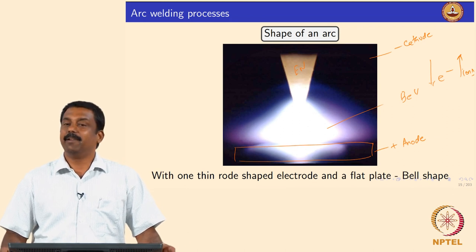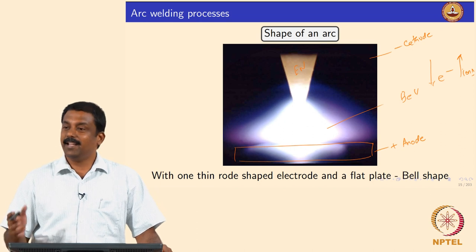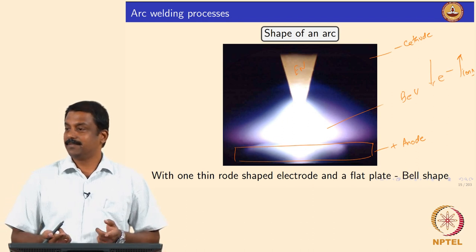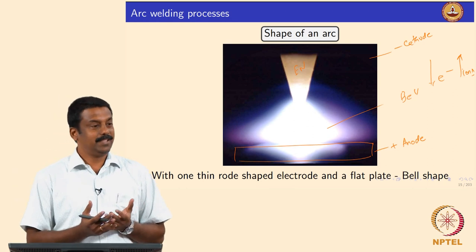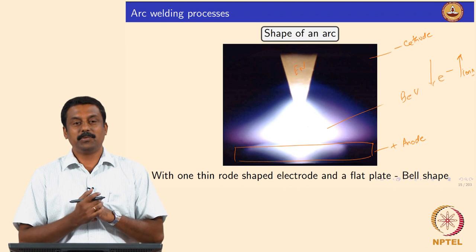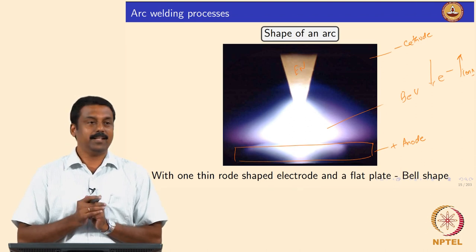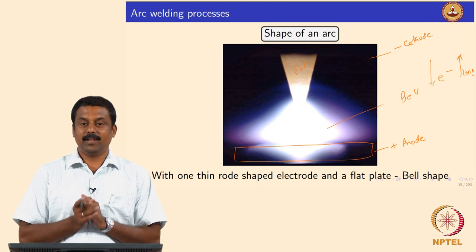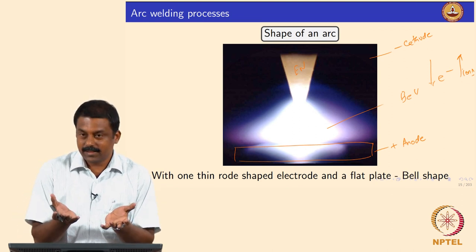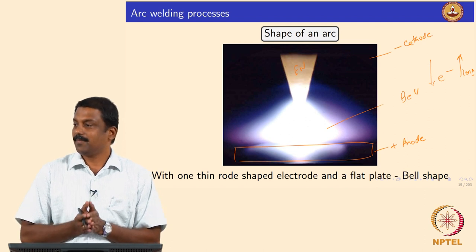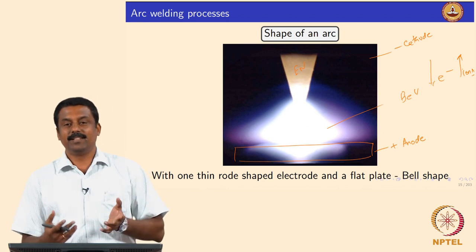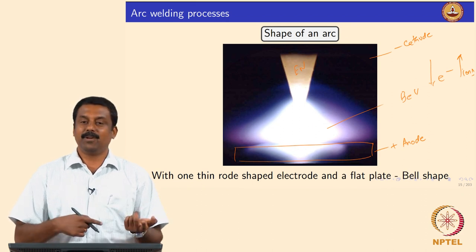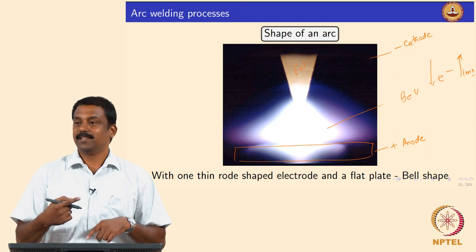So what do we do to get both advantages? We use AC — alternating current — where the polarity is switched each cycle, giving us both heating and cleaning. That is why for aluminium welding, in most cases we use alternating current: one half-cycle heats and the other half-cycle cleans the surface, so we get both actions — cleaning the oxide layer and transferring enough heat to make a proper penetration.